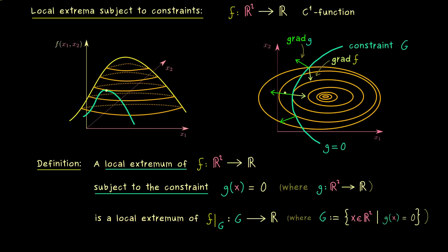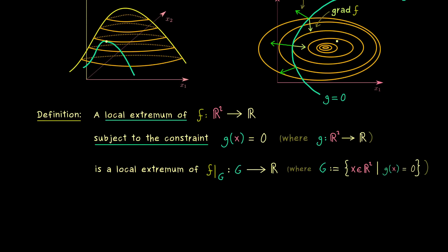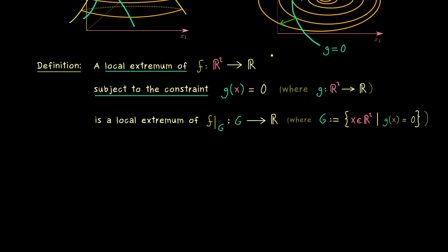Namely we have to find the points where the two gradients lie on the same line. Or more formally you would say the gradient of g spans a subspace, and the gradient of f should lie in this subspace. Exactly this necessary condition for local extrema is usually called the method of Lagrange multipliers.